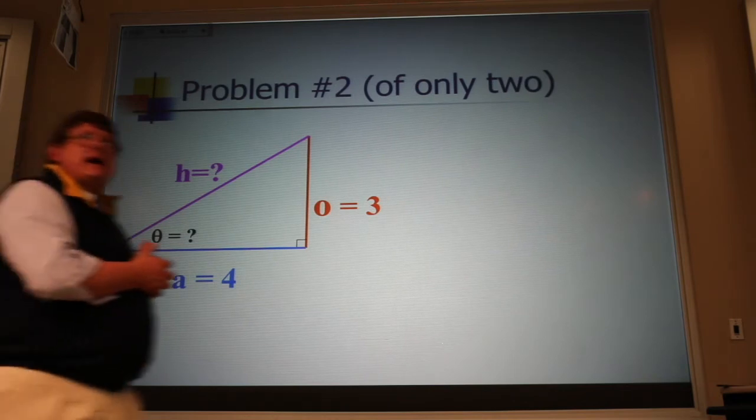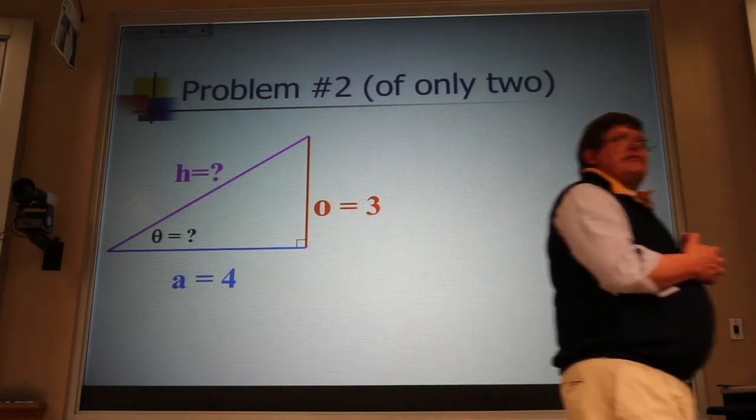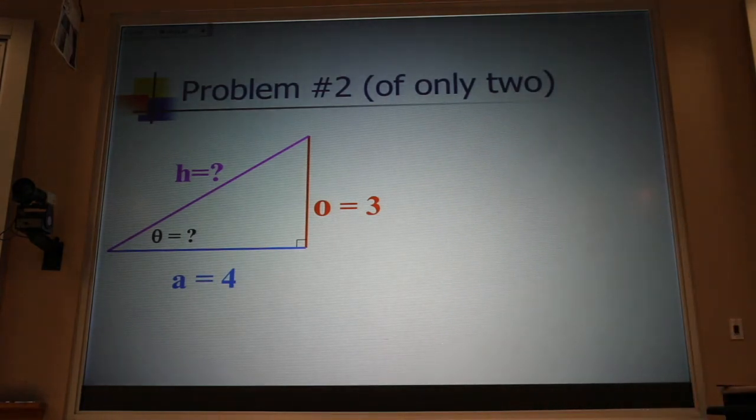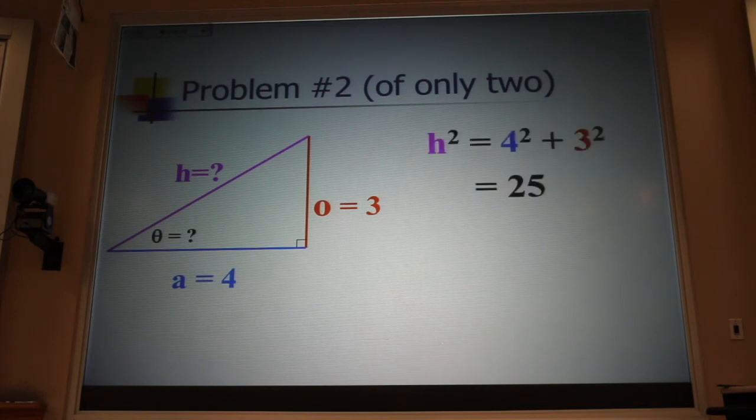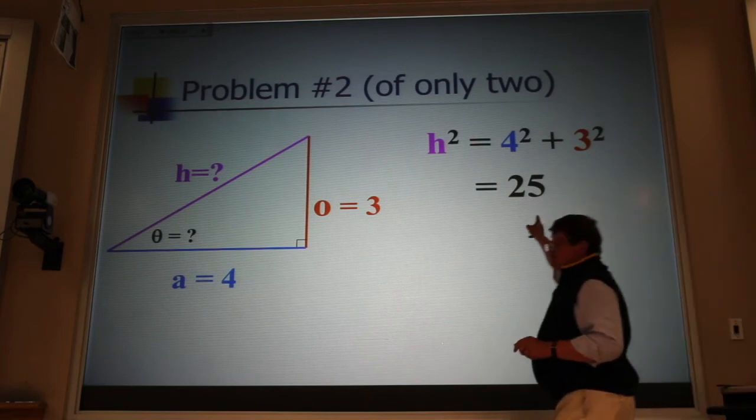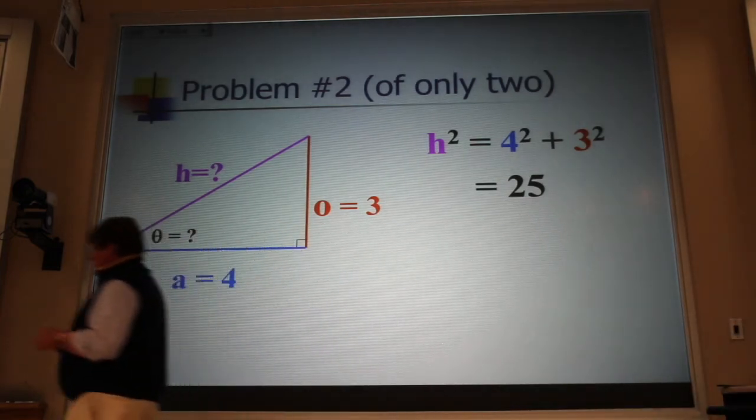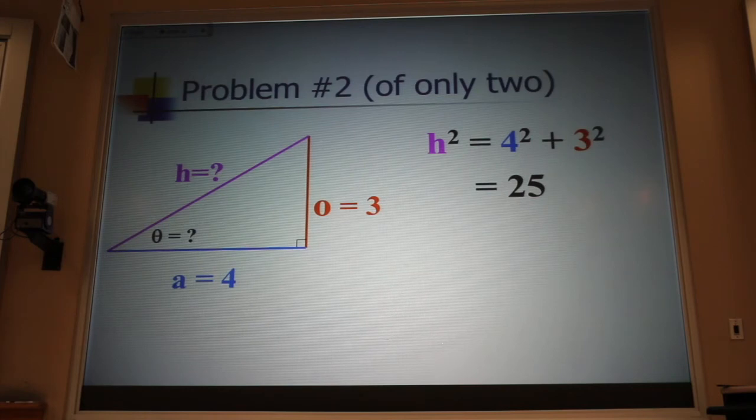Now, how am I going to find that hypotenuse? What Greek mathematical genius is going to help us with that problem? Pythagoras. Yes, we use Pythagoras theorem. a² + b² = c². Or in this case, the hypotenuse squared is equal to the sum of the two sides squared. Now, h² is equal to 25.